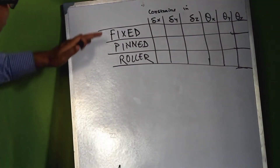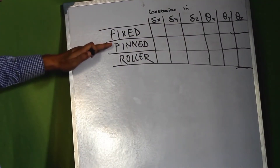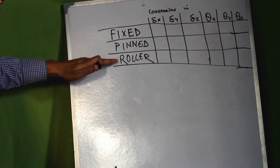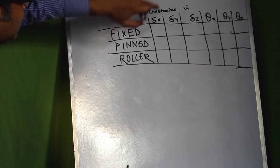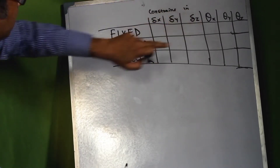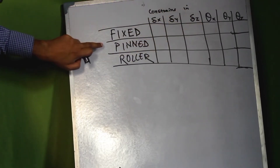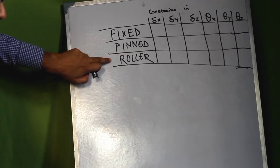Now we will discuss the fixed, pin, and roller supports, and we will also see which degrees of freedom each of these supports constrain.